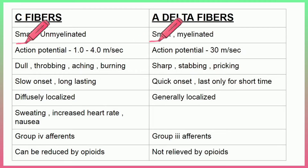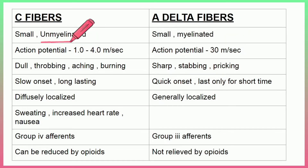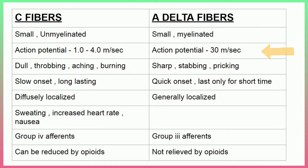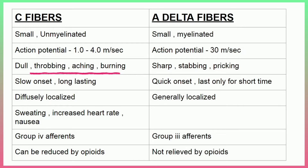Both fibers are small diameter fibers. The major difference is that A-delta fibers are myelinated, but C fibers are unmyelinated. Because A-delta fibers are myelinated, pain impulse conduction is faster — around 30 meters per second — whereas C-fiber action potential is 1–4 meters per second. That is why A-delta fibers carry sharp, stabbing, and pricking pain, while C fibers carry dull, throbbing, aching, and burning pain.